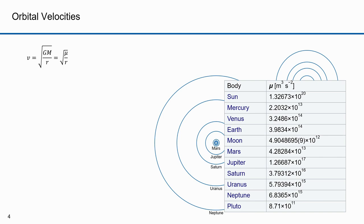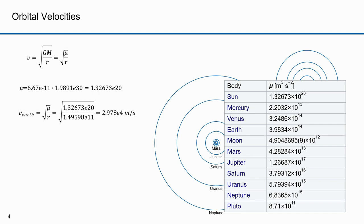With this equation I can derive mean velocities — this assumes a circular orbit, so these are mean velocities. Later I'll show you an equation that will give you the velocity anywhere along an elliptical orbit. This is the gravitational parameter for the Sun — G times the mass of the Sun. From that I can determine the mean orbital velocity of the Earth, which is mu divided by the Earth's semi-major axis: the square root of 1.32673×10²⁰ divided by 1.49598×10¹¹, giving 29,780 meters per second.